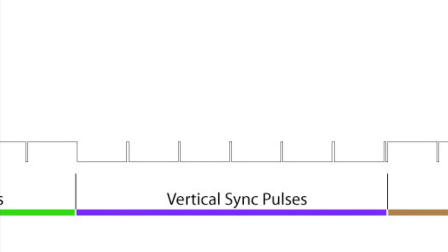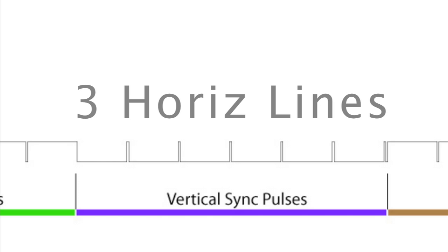Next comes the actual vertical sync or broad pulses as they're called. These again occupy the space of three horizontal lines and are comprised of six pulses.